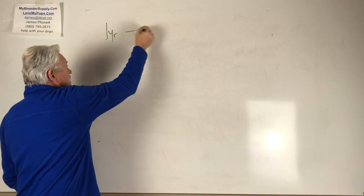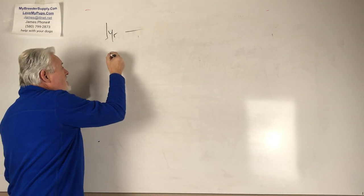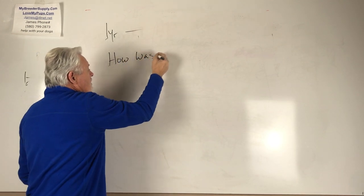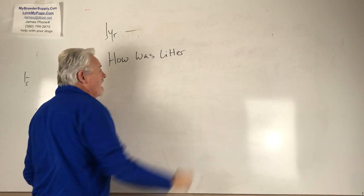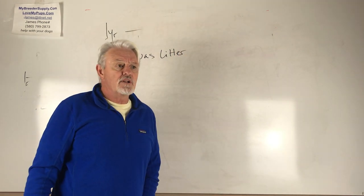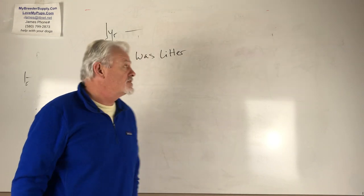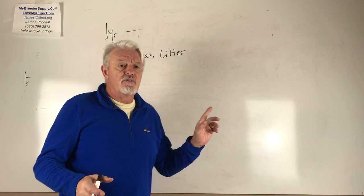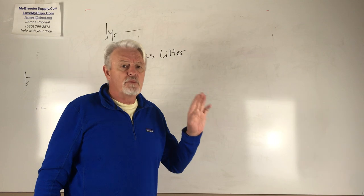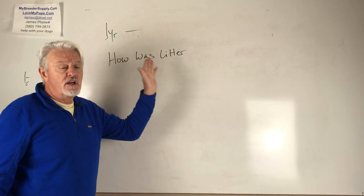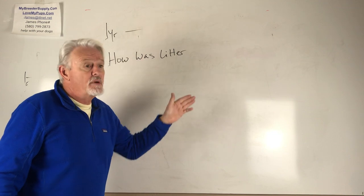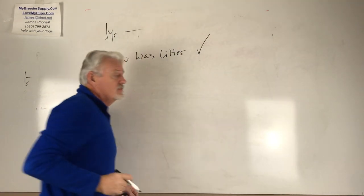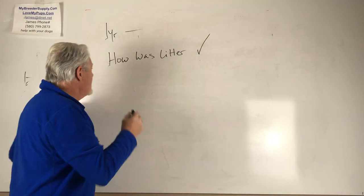So the next thing is how was the litter? You have some information about how the litter was. Did you have any problems? Did you have some puppies that had cleft palates or inguinal hernias? Did you have puppies that failed to thrive? I don't mean just a singleton occurrence of this means that you shouldn't be breeding that dog, but just pay attention to what you're producing. If you're having problems, then don't repeat it. Certainly don't repeat that breeding - breed to a different dog if you have problems.